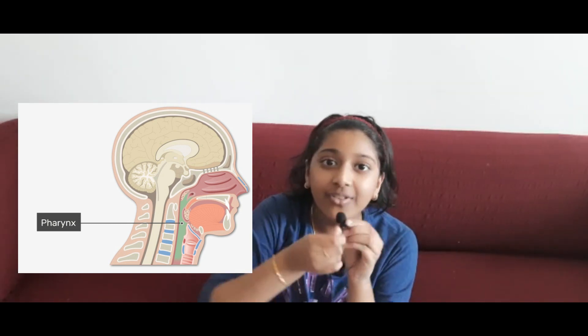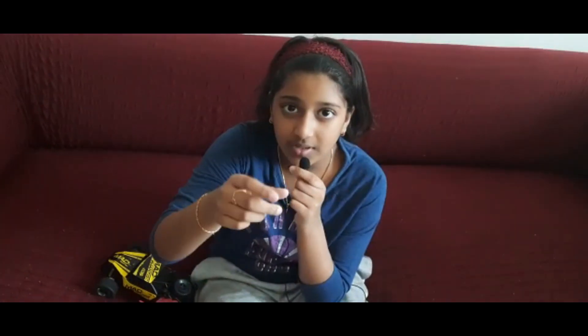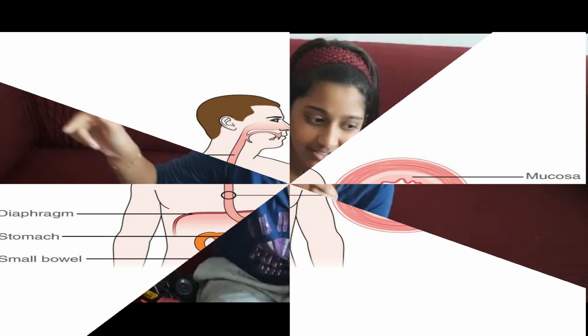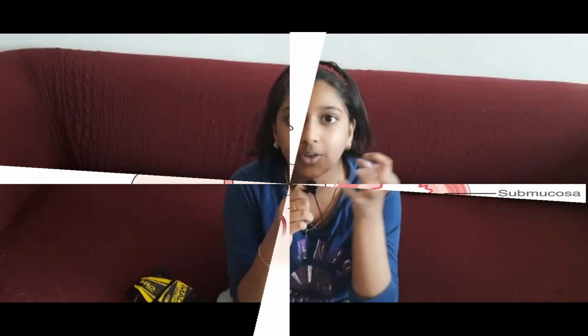Food passes from the throat through a muscular tube called the esophagus. The esophagus is a muscular tube approximately nine to ten inches long, and it carries food from the throat and transfers it to the stomach.